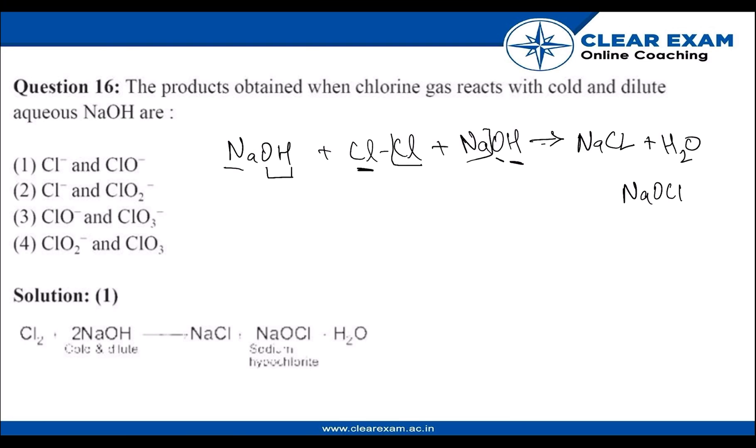So the products obtained we can say are Cl- and ClO-. So let's see which option. So solution is option one, Cl- and ClO-.